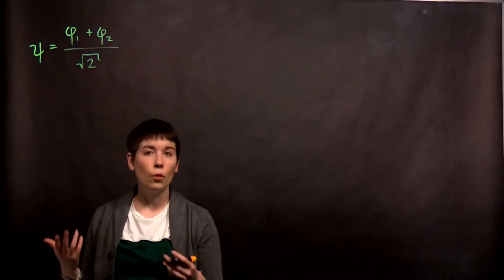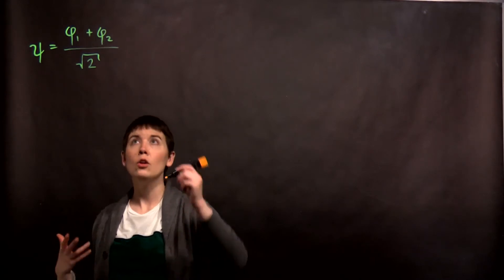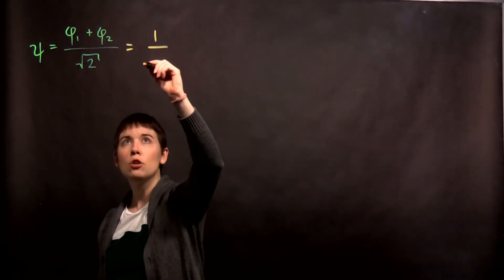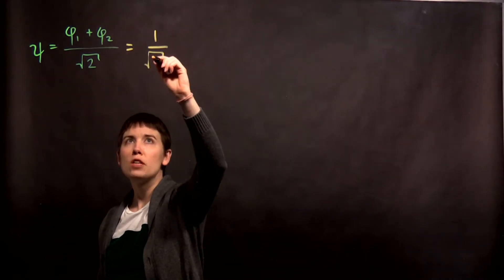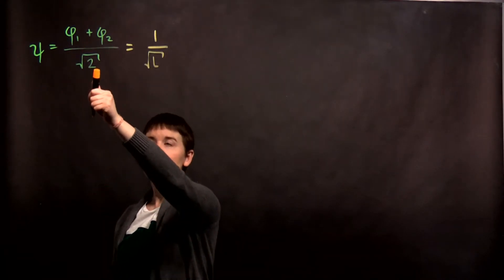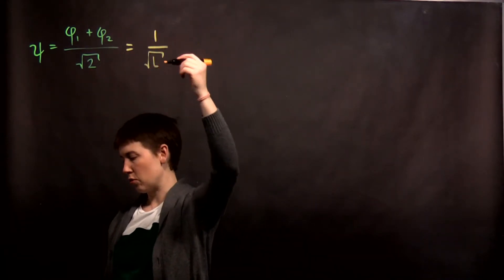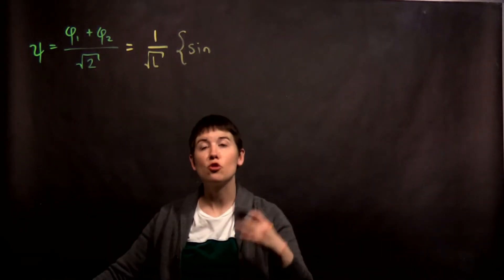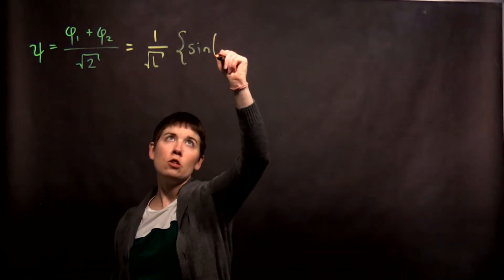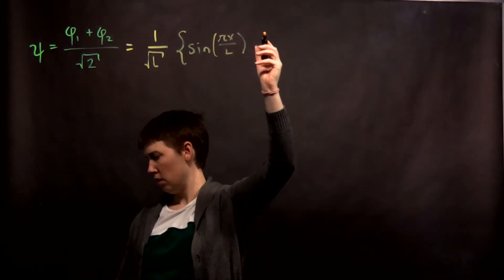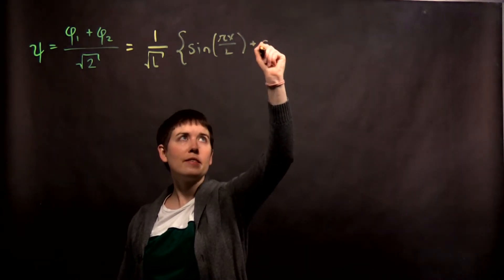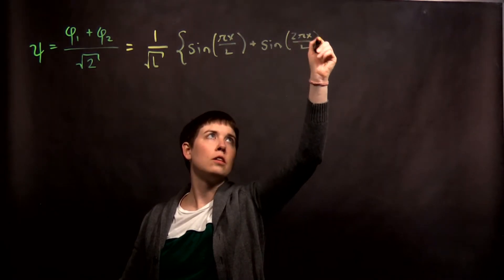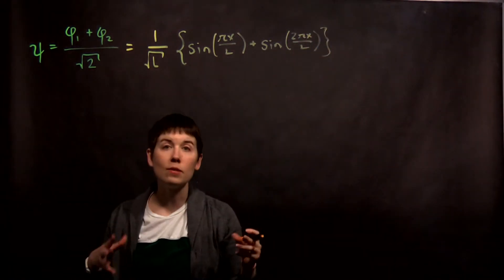So how can we understand this? Well, if this is a function of position in one dimension for the infinite well, we know what the functional forms of these are. And so then this ends up being 1 over the square root of l, which is coming from the normalization of these originally, and that square root of 2 is taking out the square root of 2 that's normally on top. And then we have the first one. Because it is phi sub 1, that is your n equals 1 eigenstate. So this is just pi x over l. And then that second one is phi 2, so that's 2 pi x over l.